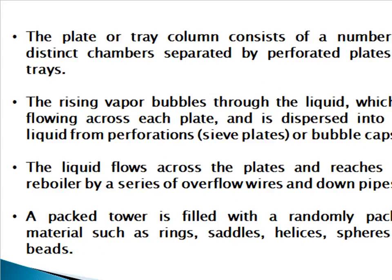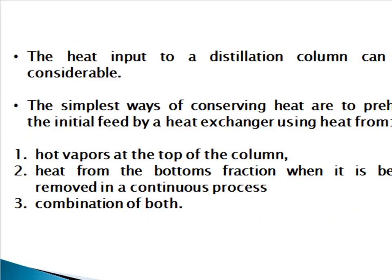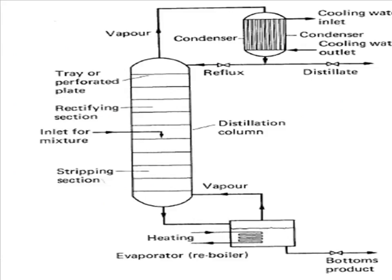Plate or tray columns consist of a number of distinct chambers separated by perforated plates or trays. Rising vapor bubbles through liquid flowing across each plate, dispersed through perforations or bubble caps; liquid flows across plates to the re-boiler via overflow weirs and downpipes. A packed tower is filled with randomly packed material such as rings, saddles, helices, spheres, or beads. Heat input to a distillation column can be considerable; heat can be conserved by pre-heating the initial feed using a heat exchanger drawing heat from hot vapors at the top of the column, from the bottom's fraction in a continuous process, or a combination of both.